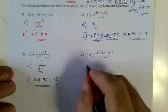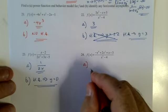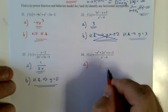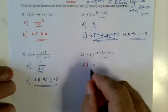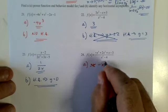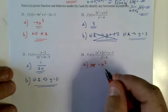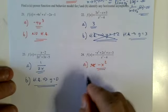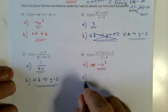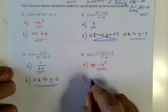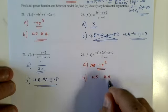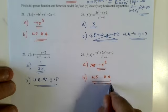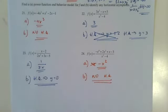And over here, part A gives negative x squared. For part B, horizontal asymptote — there are no horizontal asymptotes. There will be a slant asymptote or some other sort of asymptote.